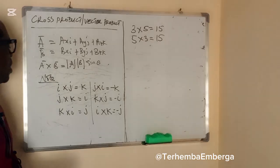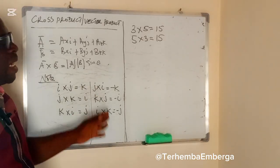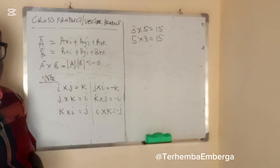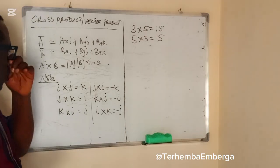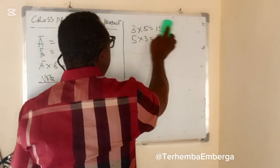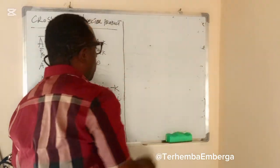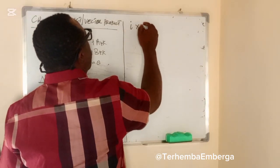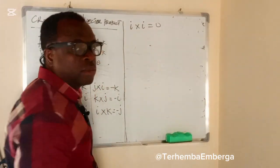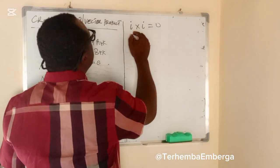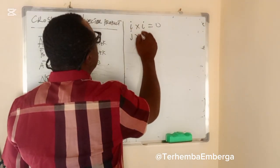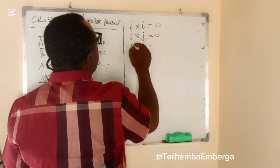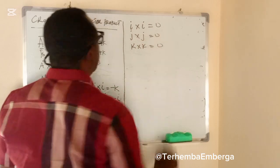This has to do with vectors that are perpendicular to each other. But when you talk about vectors that are parallel, for example, if you say I cross I is 0, J cross J is 0, and K cross K is 0.